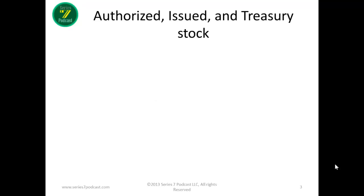There are three types of stock that you need to understand and know the differences between. They're pretty simple. First, there's authorized stock. Authorized stock is simply the stock that is authorized in the Articles of Incorporation — some people call that the charter of the corporation. The charter will authorize a specific number of shares that the company may issue. Issued stock is simply the portion of the authorized stock that has actually been issued.